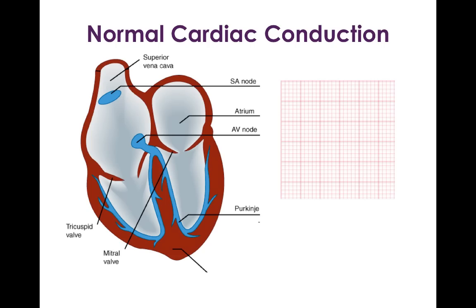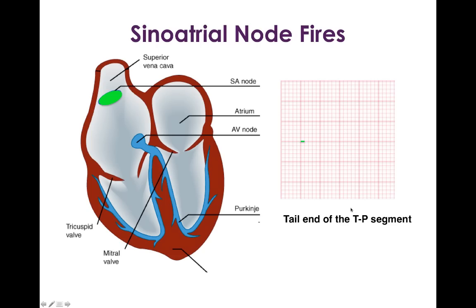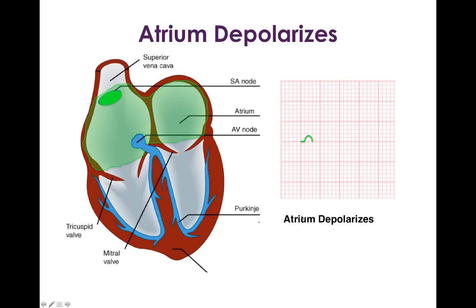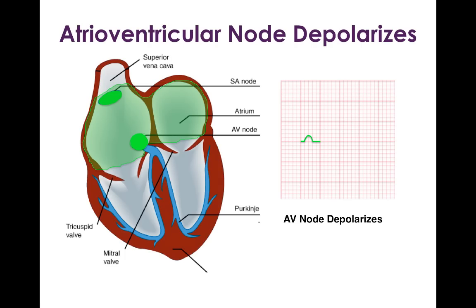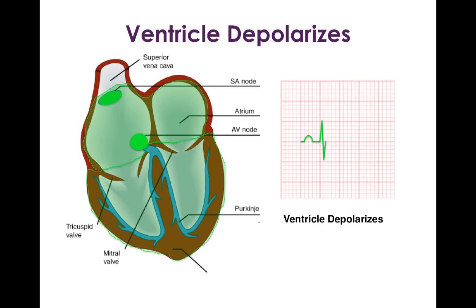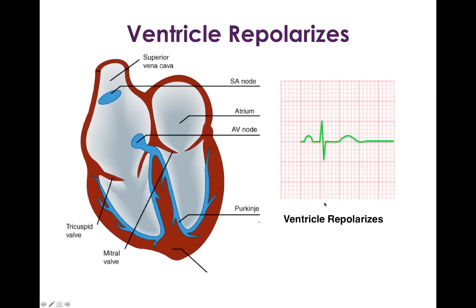Let's first recap normal cardiac conduction. I have a little EKG graph paper over here. The SA node fires, but that's essentially electrocardiographically silent. The atria depolarize leading to the P wave. The AV node depolarizes, and that's electrocardiographically silent, so there's the PR interval inscribed on the EKG tracing. Then the ventricles depolarize rapidly down the His-Purkinje system and bundle branches, leading to a sharp QRS complex. Then the atria repolarize, which are electrocardiographically silent, and eventually the ventricles repolarize, leading to a T wave.